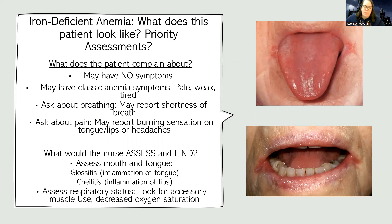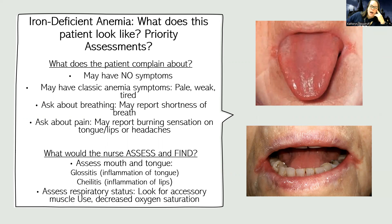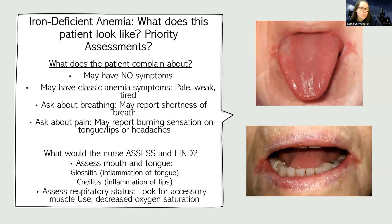You want to see if there's any burning sensation on their tongue or lips, or if they have any headaches. When assessing, you're going to look at their mouth and tongue for those specific iron deficient anemia symptoms, and also look at their respiratory status — are they using any accessory muscles to breathe? What's their oxygen saturation?